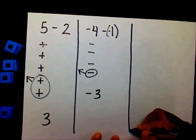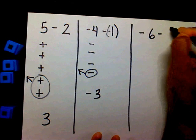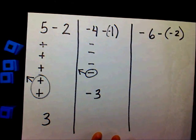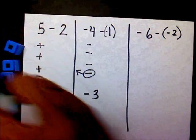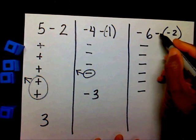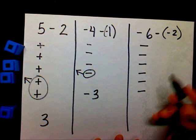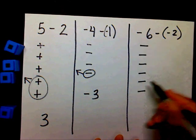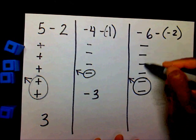If you will try this one. Alright — I have six negatives and I want to take away two negatives. Do I have two negatives to take away? Yes I do. What's left? Four negatives.